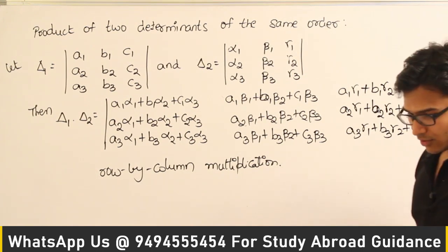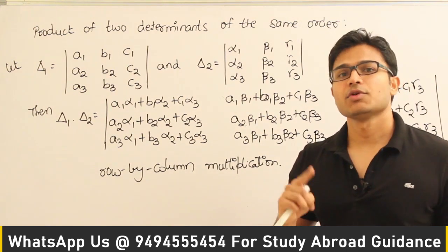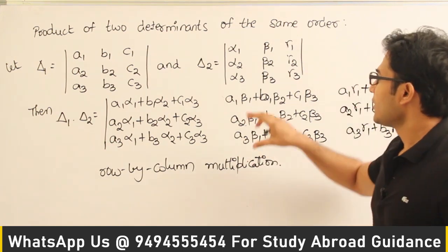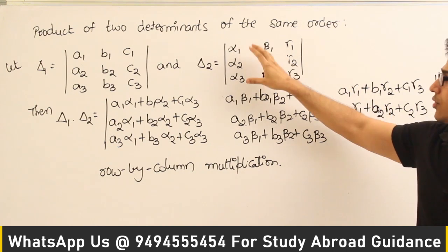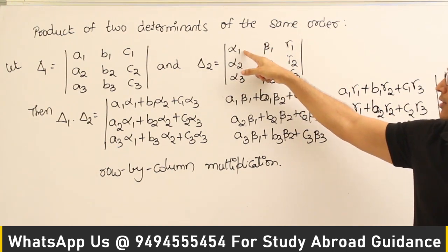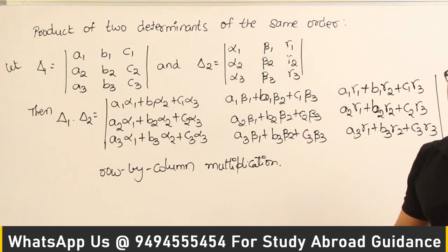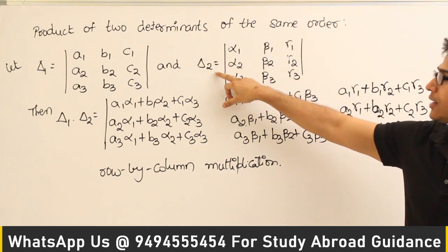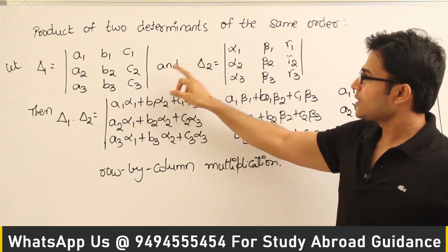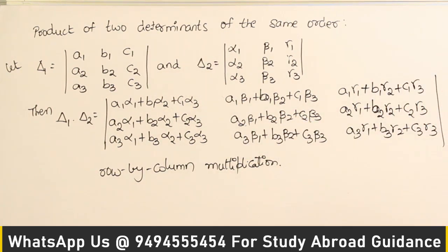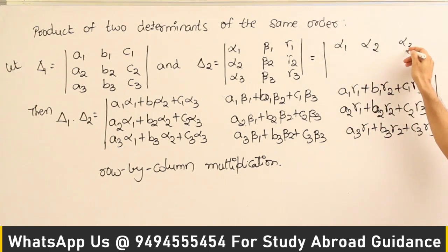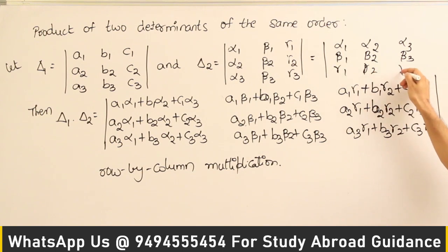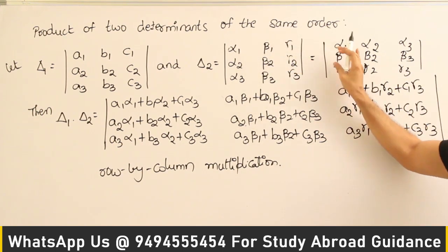Now, one interesting thing: we know that if A is a matrix and we take its transpose, the determinant is not going to change. The value of the determinant, if I interchange rows and columns, is not going to change. Which means instead of taking delta 2, you could take the transpose of delta 2 — writing alpha1 alpha2 alpha3 in the first row, and so on. Then delta 2 doesn't change. So this determinant with alpha1 alpha2 alpha3 / beta1 beta2 beta3 / gamma1 gamma2 gamma3 is equal to the original delta 2.